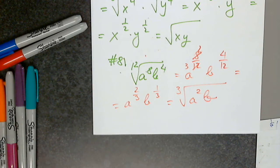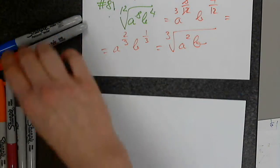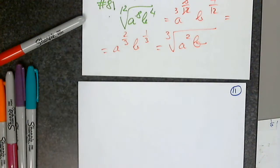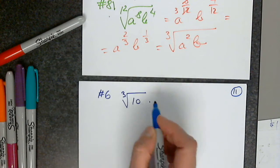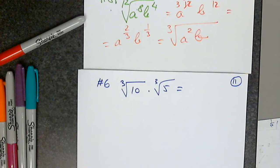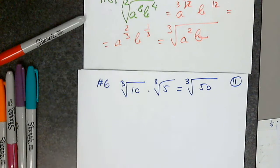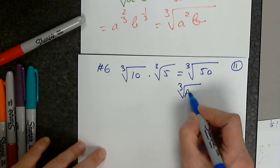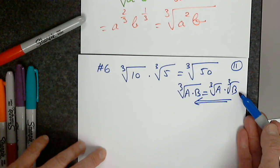Let's do more simplification — it's all about going back and forth with the rules. Problem: simplify the cube root of 10 times the cube root of 5. Since they have the same index, I copy the index and multiply the two radicands to get the cube root of 50.